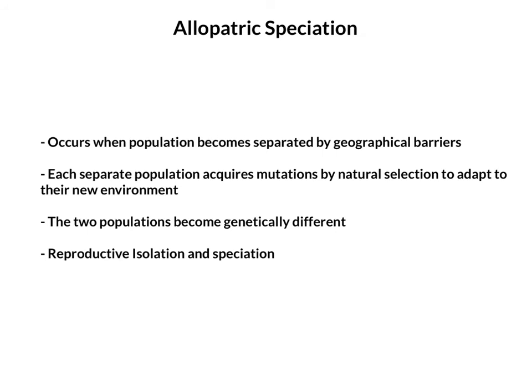Allopatric speciation occurs when one species that comes from the same ancestor becomes separated due to geographical barriers — such as mountains, newly formed rivers, the movement of a glacier, whatever it may be. This one species has now become two separate species due to the presence of these geographical barriers.